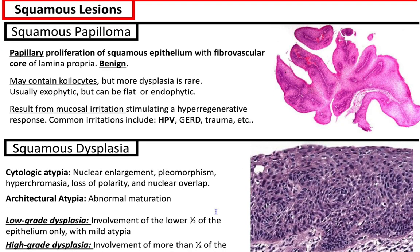Squamous lesions: squamous papilloma is a papillary proliferation of squamous epithelium with fibrovascular cores of lamina propria. It's benign, may contain koilocytes, but marked dysplasia is rare. Usually exophytic but can be flat or endophytic. It results from mucosal irritation stimulating a hyper-regenerative response. Irritants include HPV, GERD, and trauma.